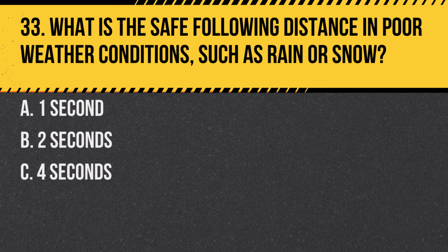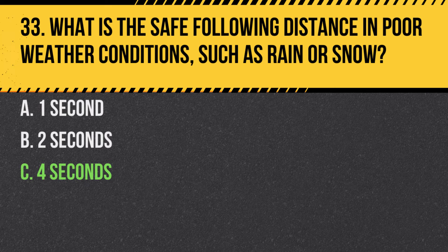Question 33. What is the safe following distance in poor weather conditions such as rain or snow? a. One second. b. Two seconds. c. Four seconds. Answer: c. Four seconds. Poor weather conditions require a longer following distance for safety.